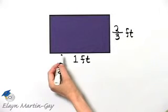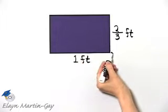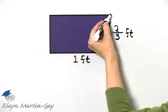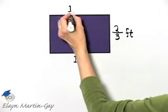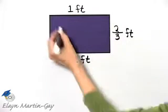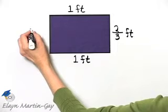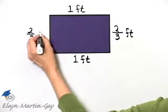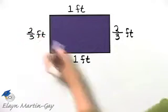Since this is a rectangle, this length is the same as this length, so this is one foot also. And this width is the same as this width, so this is two-thirds of a foot also.